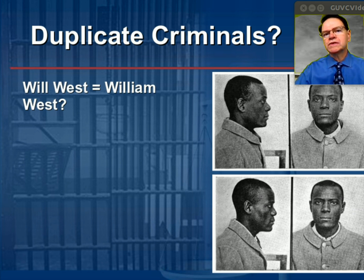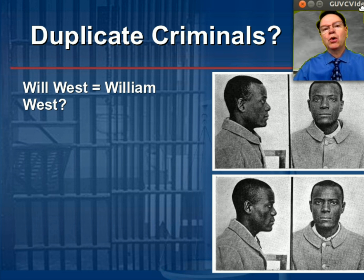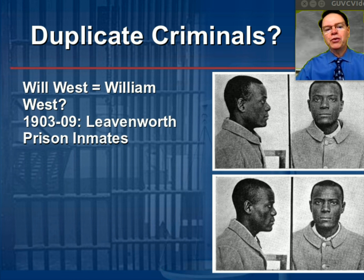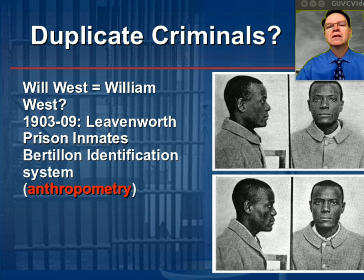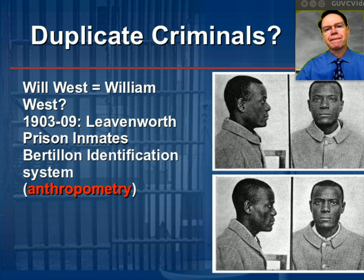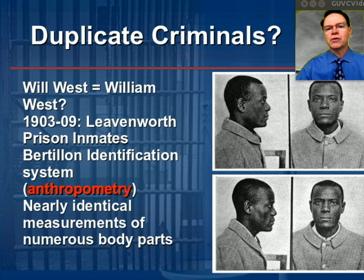Consider these two individuals you see here. The person at the top of the screen is Will West; the one below is William West. Both were incarcerated in Leavenworth Prison between 1903 and 1909. They're surprisingly similar in appearance, but that's not all. During this period there was a system for identifying inmates known as anthropometry, developed by Alphonse Bertillon, which used detailed measurements to distinguish one criminal from another. The measurements for these two gentlemen were virtually identical across about 15 different measurements, making them virtually indistinguishable within the criminal justice system.